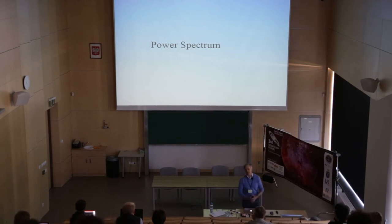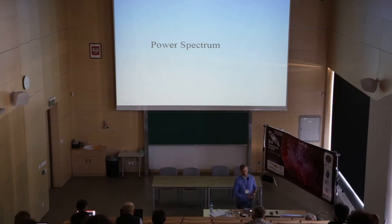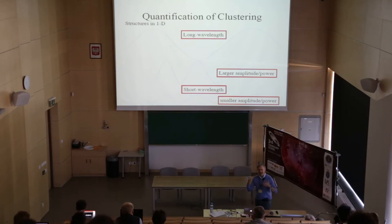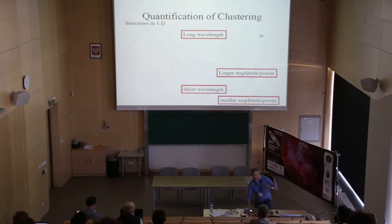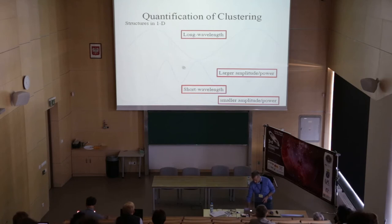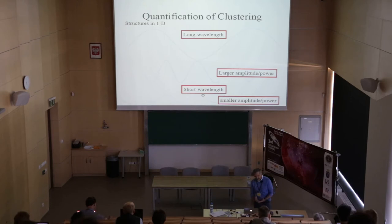Now, the power spectrum - this is a more theoretically friendly statistical descriptor, because we like to live in the Fourier domain. Consider a long-wavelength, one-dimensional perturbation with high amplitude; then a larger amplitude with short wavelength; then a smaller amplitude also with short wavelength. The power spectrum quantifies all of these components. When we superpose a long wave with high amplitude and a short wave with small amplitude, the final distribution has a lot of long-wavelength power and little short-wavelength power - and this is the kind of measurement the power spectrum makes.